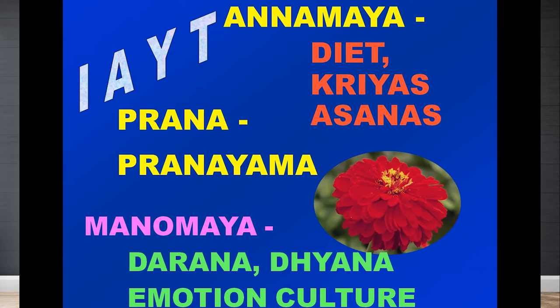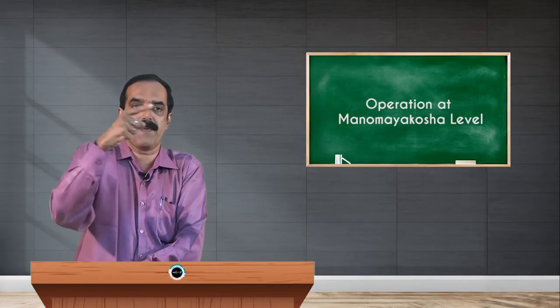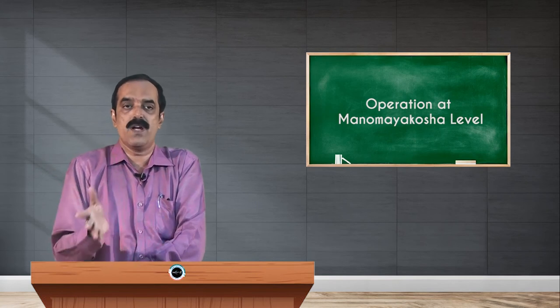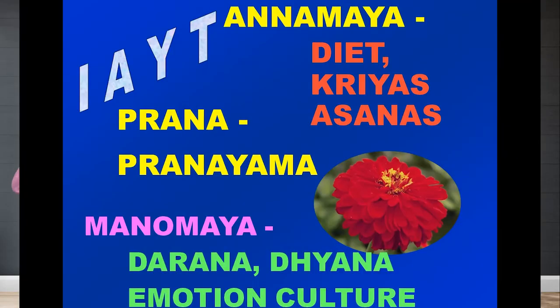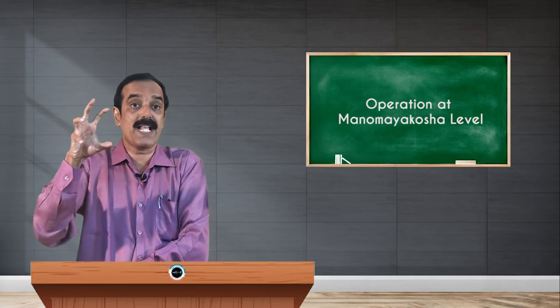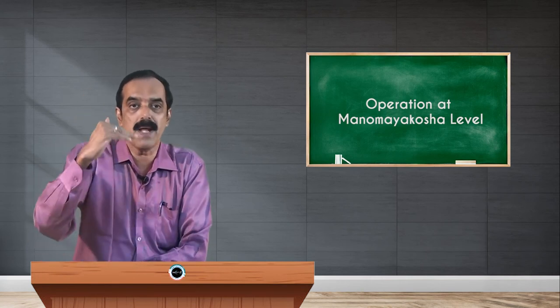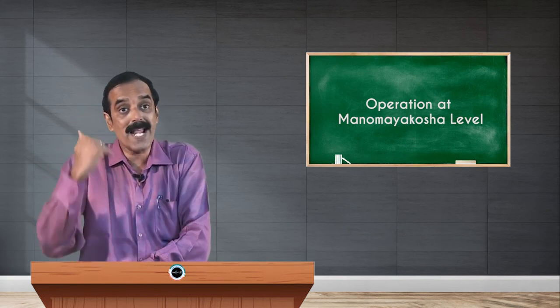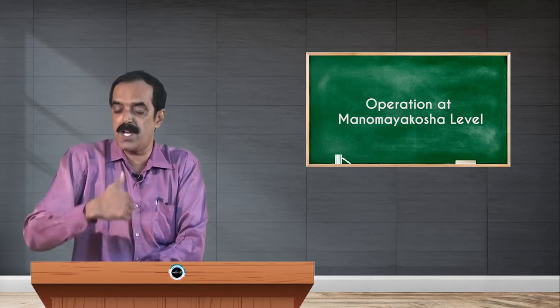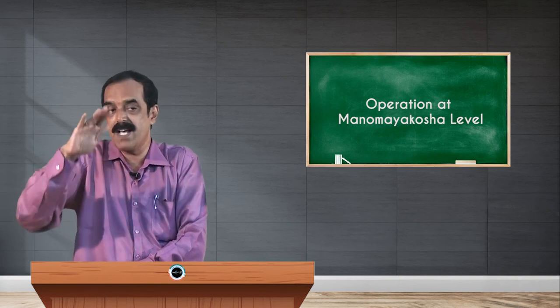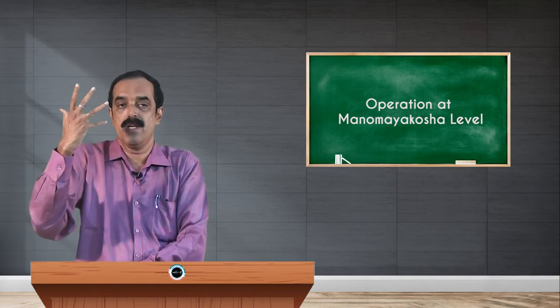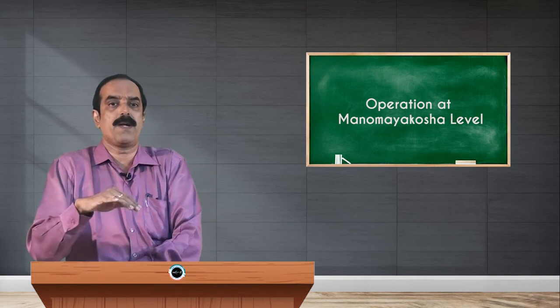Pranasyedam vashe sarvam — prana should be controlled — and Patanjali says: tasmin sati shvasaprashvasayor gativicchedah pranayamah. When you do inhalation and exhalation with retention, you gain mastery over prana. For stressful conditions, research studies show that left nostril breathing — inhale from left, exhale from left — practiced ten times, four times a day, brings stress levels down. The heart is controlled by the parasympathetic nervous system, reducing and balancing blood pressure and heart rate, increasing awareness.